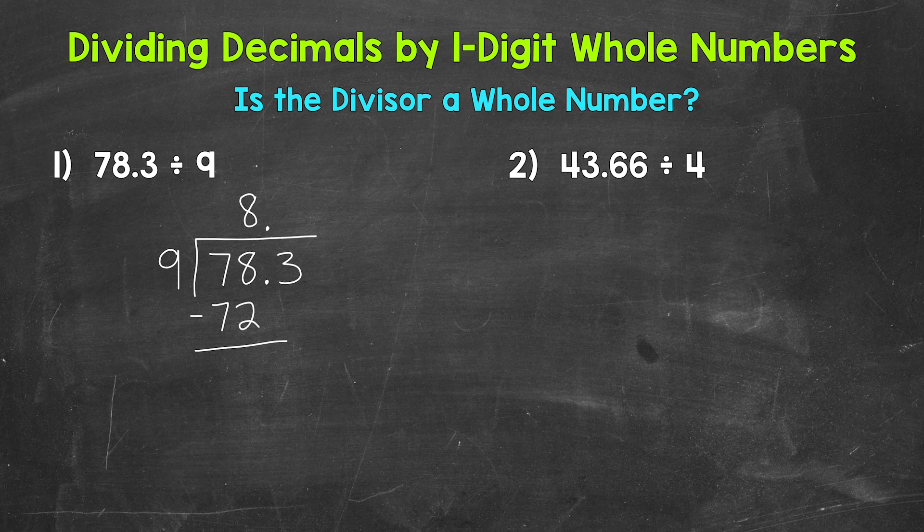Subtract, 78 minus 72 is 6. Bring down. Now we have 63 and we repeat. So we go back to divide, 63 divided by 9. How many whole groups of 9 in 63? Well, 7.